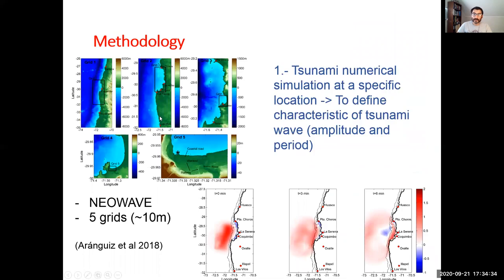Now I'm going to present the methodology that we implemented in this research. The first step we defined representative tsunami wave parameters in a given place. To do this we ran tsunami numerical simulations in Coquimbo Bay, Chile using the NEOWAVE model and five nested grids. The higher grid resolution was 10 meters and we also defined a tide gauge in the southwest corner of the bay in order to get a time series and then define a representative tsunami wave.